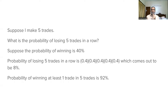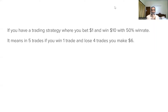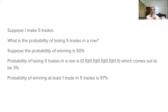This is what probability theory is. Now suppose you are not a good trader and your win rate is just 40% — you have a trading strategy with only a 40% win rate. The probability of losing 5 trades in a row with a 40% win rate is 0.4 × 0.4 × 0.4 × 0.4 × 0.4, which comes out to be about 8%.